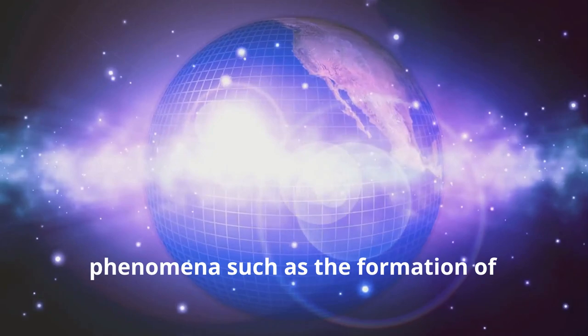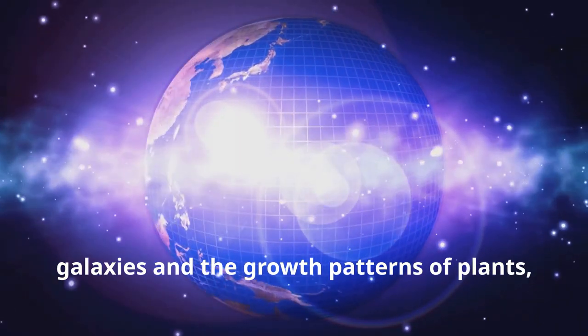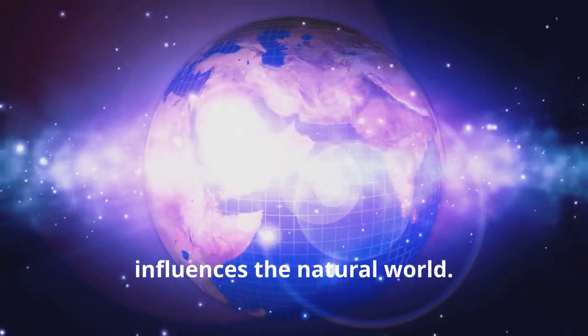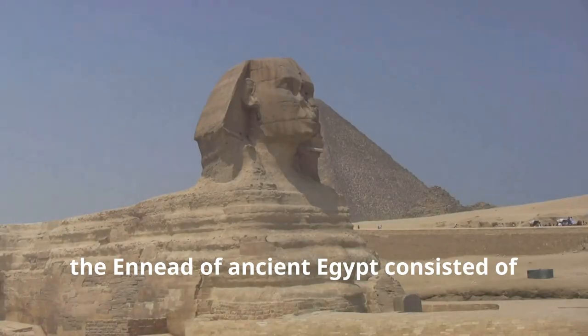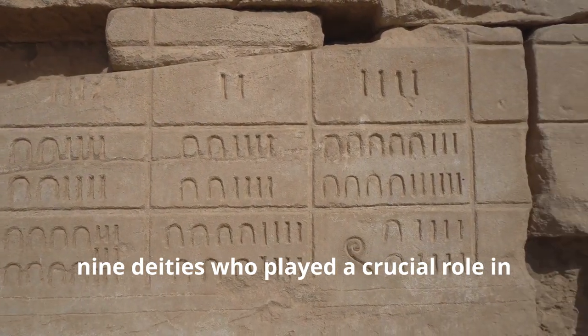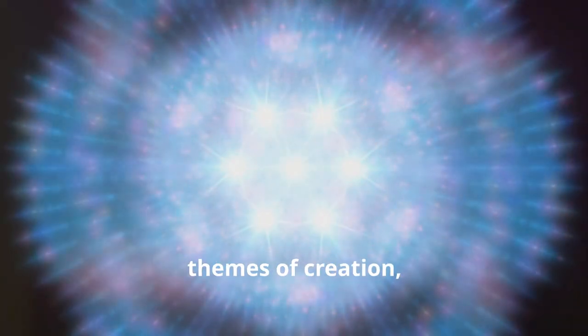This shape can be seen in natural phenomena such as the formation of galaxies and the growth patterns of plants, suggesting a cosmic blueprint that influences the natural world. Moreover, in mythology, the Ennead of ancient Egypt consisted of nine deities who played a crucial role in the creation of the world. This further aligns the number nine with themes of creation, completeness, and divine wisdom.